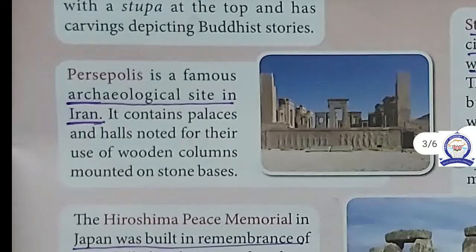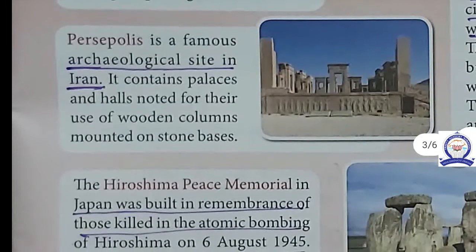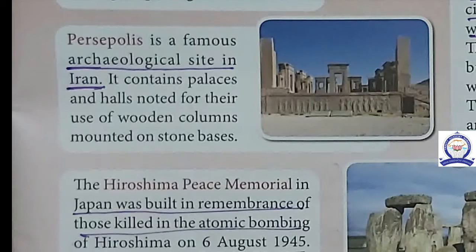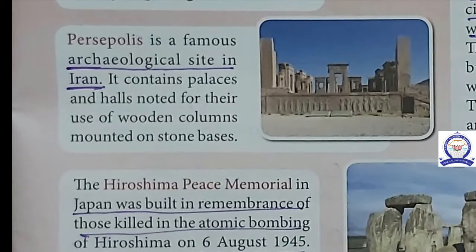The next one is Persepolis, a famous archaeological site in Iran. It contains palaces and halls noted for their use of wooden columns mounted on a stone base.